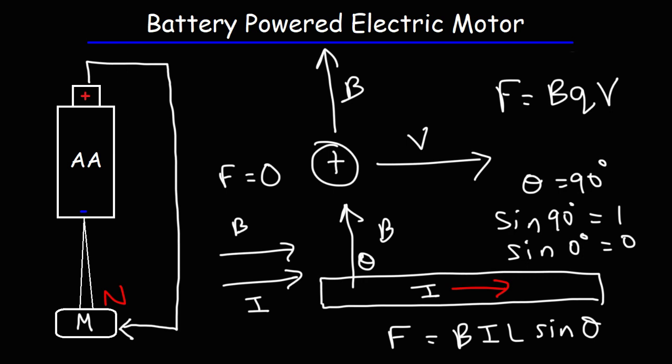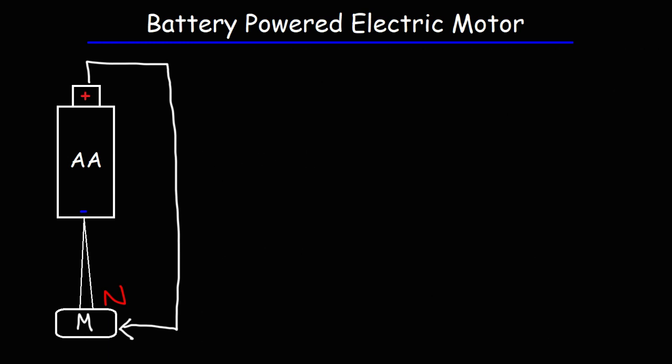So to get the maximum Lorentz force, you want the magnetic field and the direction of the current to be perpendicular to each other. So let's apply this information to the motor that we have in this experiment.